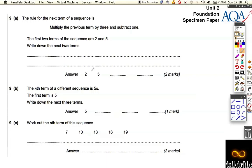So 2 times 3 is 6, minus 1 is 5. 5 times 3 is 15, minus 1 is 14.